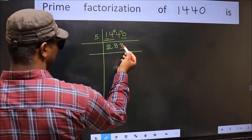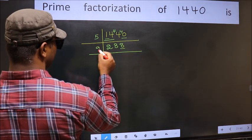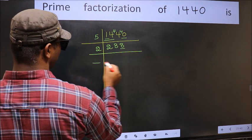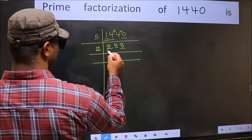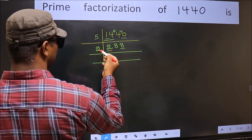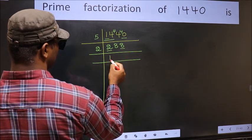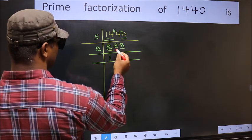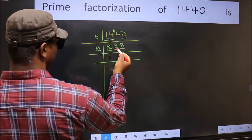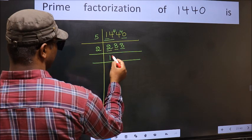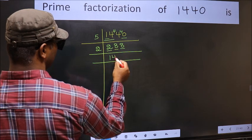Now the last digit 8 is even, so take 2. The first number is 2. When do we get 2 in the 2 table? 2×1=2. The other number is 8. When do we get 8 in the 2 table? 2×4=8.